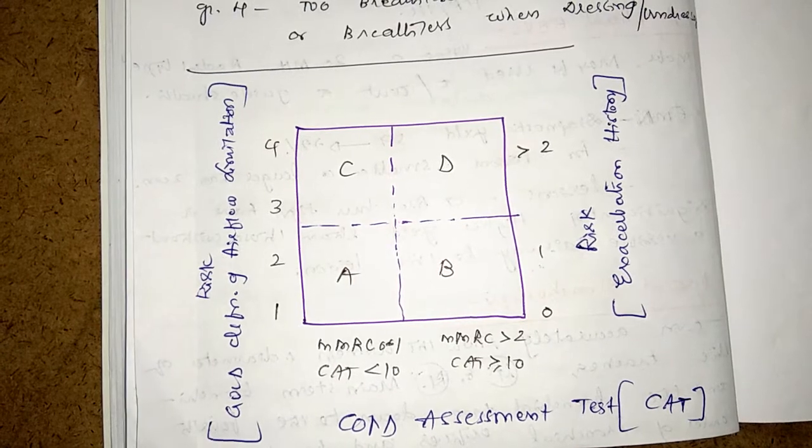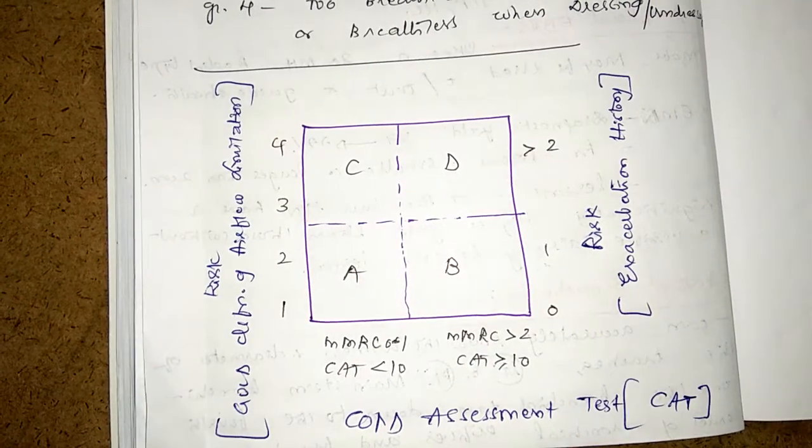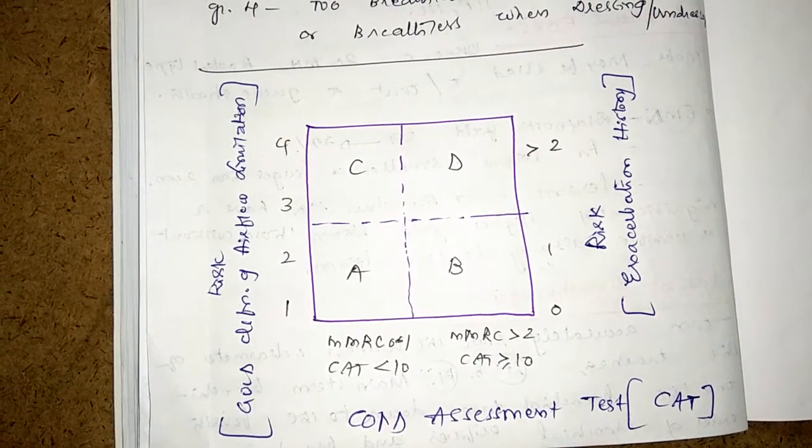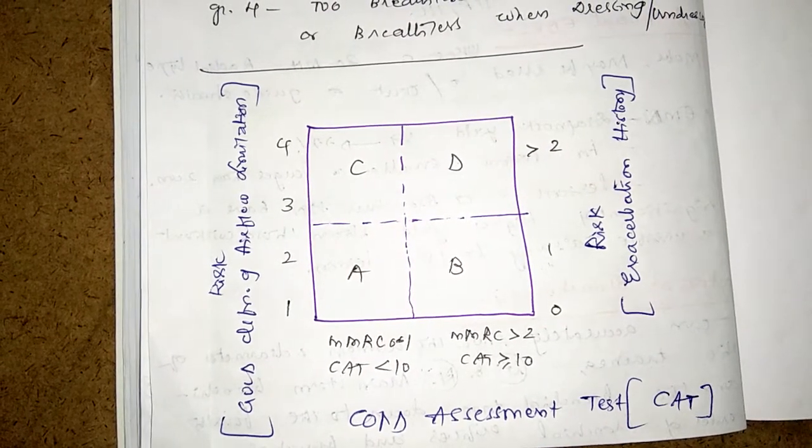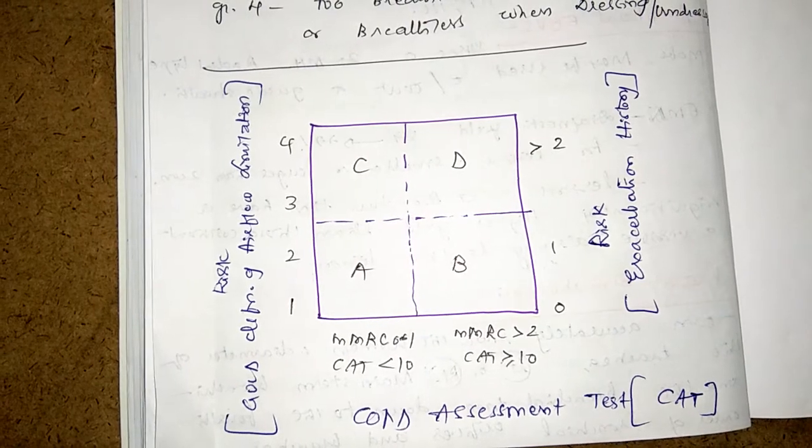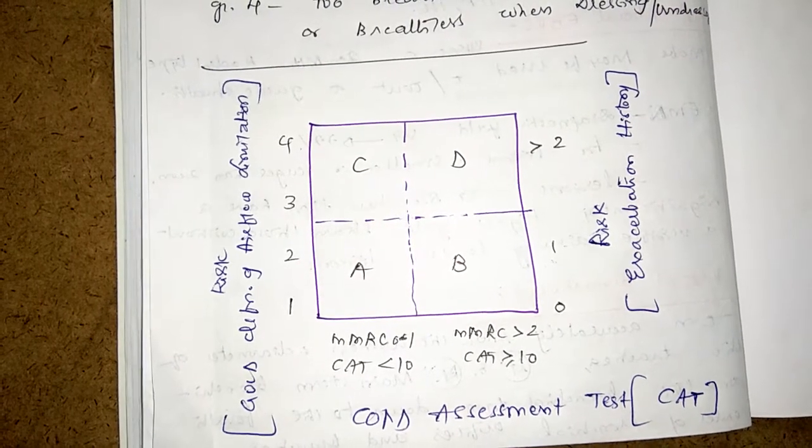Dyspnea grading scale: in A and C mMRC 0 to 1, in B and D mMRC more than or equal to grade 2.